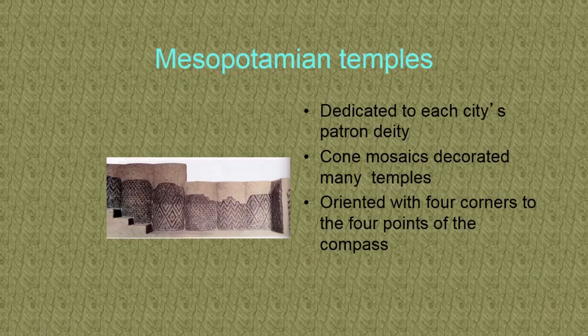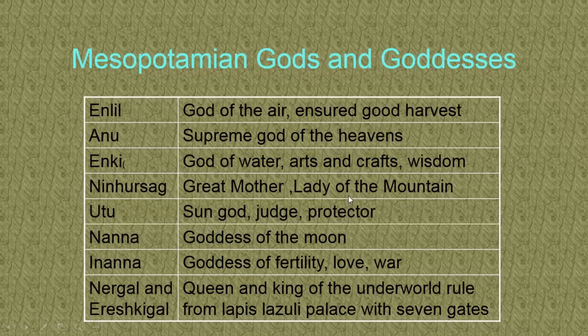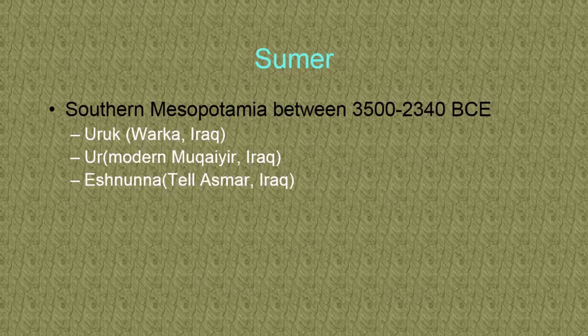These are cone mosaics that decorate many different temples, showing the kind of patterning you would see inside. We don't have any full temples left, but we know the temples were dedicated to each city's patron deity and were oriented with the four corners to the four compass points — which tells us they had navigation skills and knew North, East, South, and West. Here are the names of the gods and goddesses again. The first civilization we're taking another look at is Sumer.